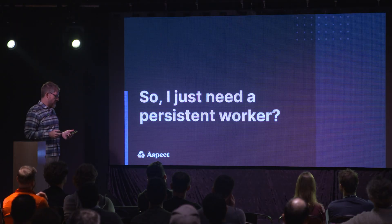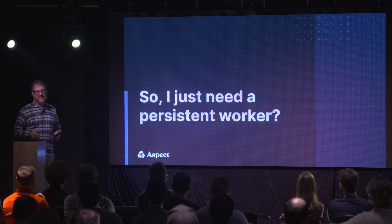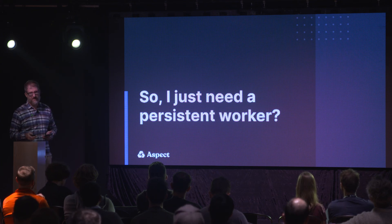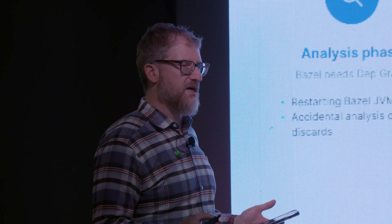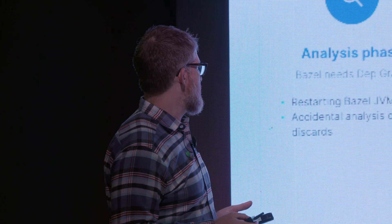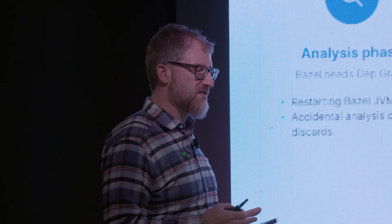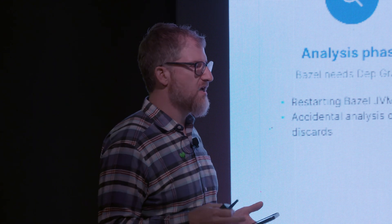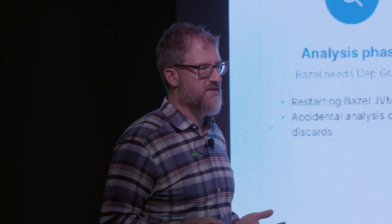This is the first step, because there's a whole laundry list of deoptimizations that will still happen even after you've accomplished persistent runners. Starting in the analysis phase: Bazel has a dependency graph, and in order to build that graph it has to analyze all the input files in a really large repository — that can take a couple of minutes. It's easy to accidentally redo that work because it stores the results of the analysis phase in the JVM. Bazel has a long-running server. If you restart it, or if you change some flags next time you call Bazel and accidentally some of those flags affect analysis, it will just discard the analysis cache and do it all over again.